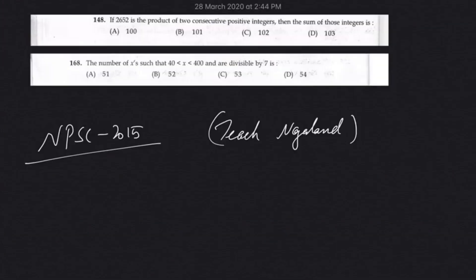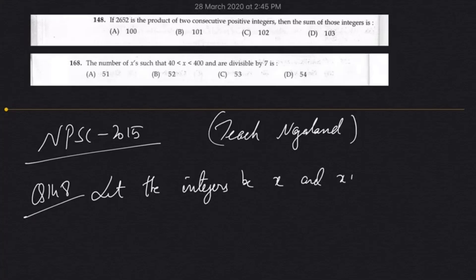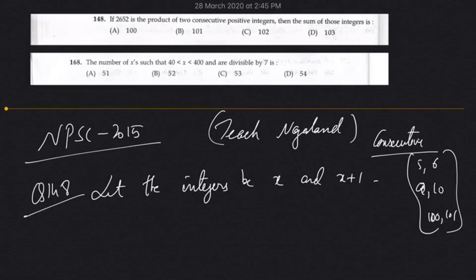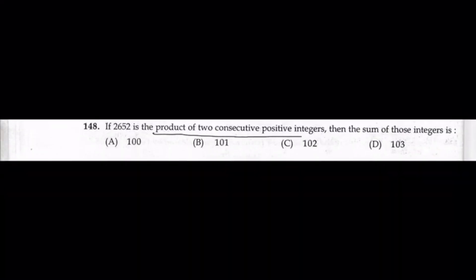Let's finish these two questions. Question 148: If 2652 is the product of two consecutive positive integers, then find the sum of those integers. Let the integers be x and x+1 because it is mentioned consecutive. Consecutive means if one is 5, the other will be 6. If it is 9, next will be 10. If it is 100, next will be 101.